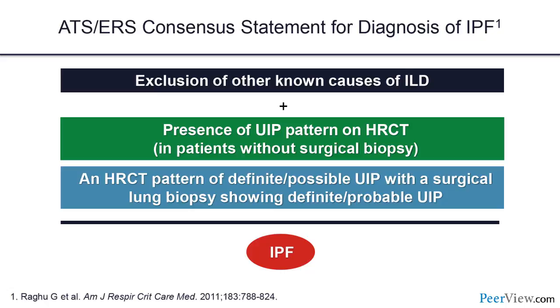IPF requires two things beyond a reasonable doubt: we've excluded other causes of ILD — and that's more of a process than a one-time experiment, because things can change over time. Patients initially thought to be idiopathic may later develop positive serologies and joint symptoms, revealing autoimmune disease. So exclusion of other known causes of ILD is an ongoing process, critical to knowing if this is IPF.